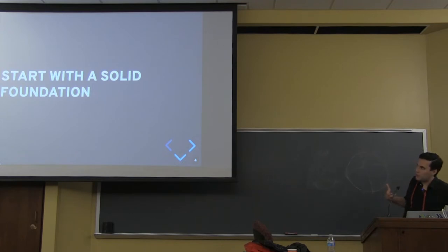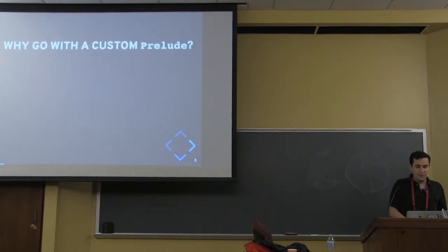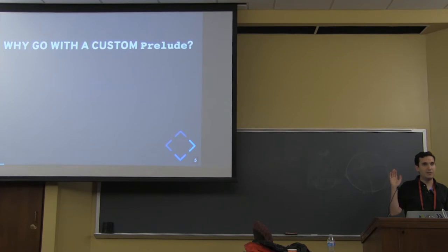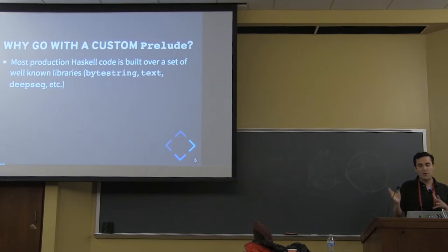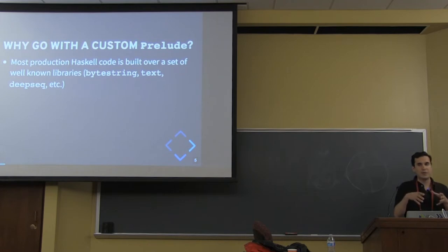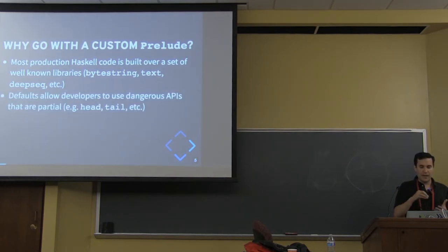The first point of making really solid Haskell programs is starting with a solid foundation, and for that you more than likely want to go with a custom prelude. Prelude is the library that gets implicitly included in your Haskell programs — it's a standard library. It's well known that the existing Haskell prelude is filled with warts: it has a lot of unsafe functions that will throw runtime exceptions if you don't use them correctly.